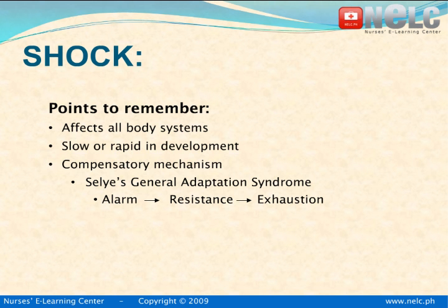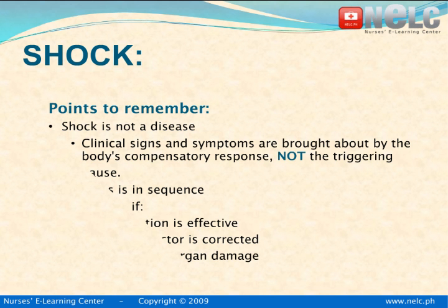Shock is not a disease. It occurs as a result of an insult in the body that lessens the blood flow to certain areas. Since pathology denotes a condition produced by a disease, shock is not a pathological condition either. Shock's clinical signs and symptoms are not linked to its cause; they are related to the compensatory response of the body. Shock progresses in a predictable sequence. Therefore, nursing care of a patient suffering from it would require ongoing sequential assessment as well as close collaboration with other members of the healthcare team.